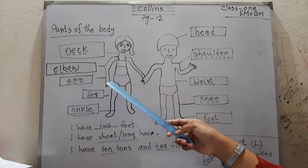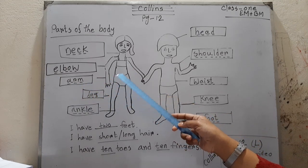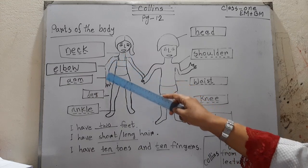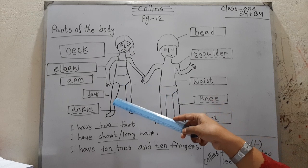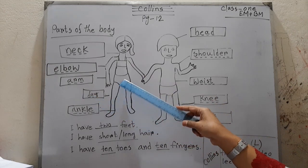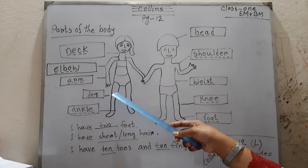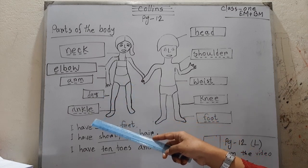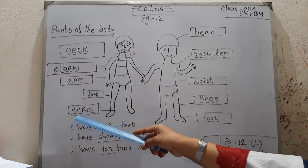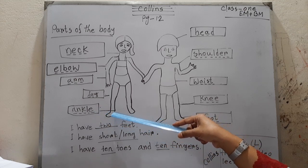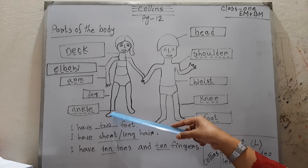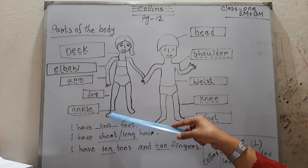Then: arm means 'bahu'. Leg means 'pa' or 'leg'. Ankle means 'gira' — the joint connecting the foot with the leg.